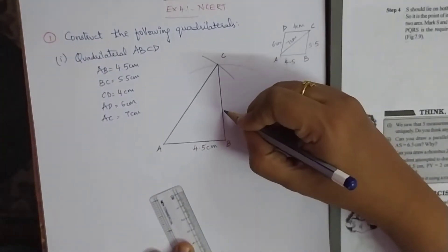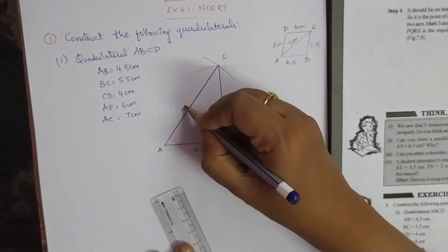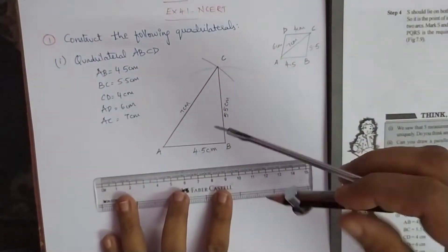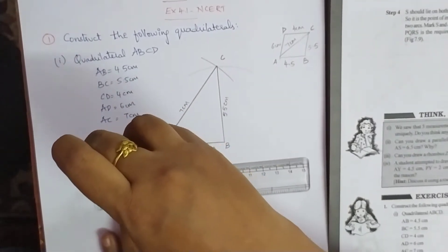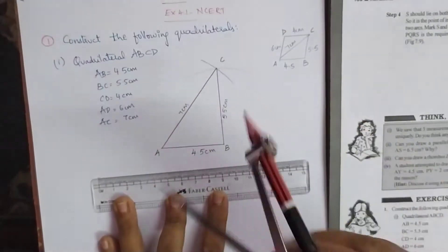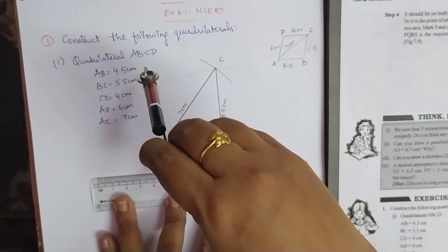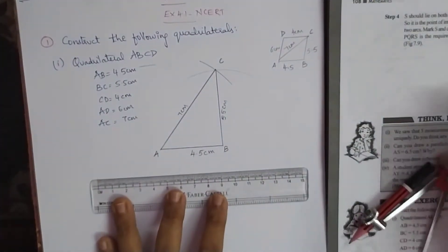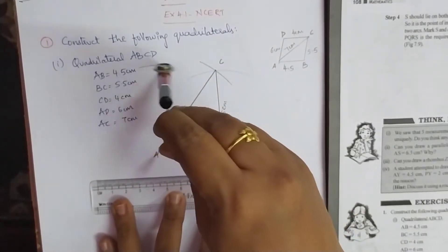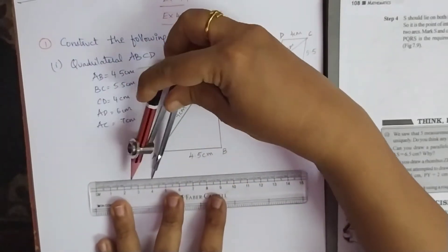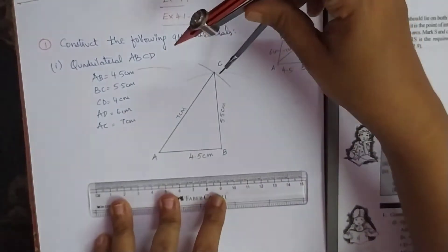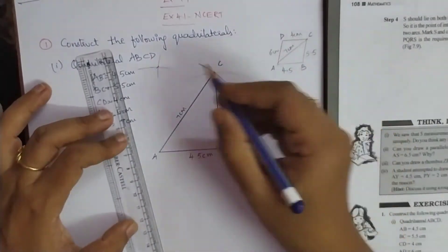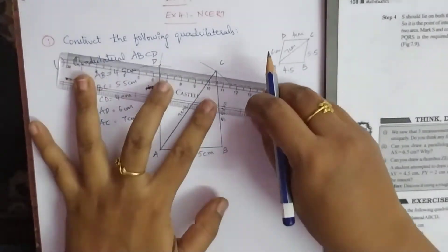Write the measurements there as 5.5 cm and 7 cm. The last measurement which is left is AD — AD is 6 cm. So from 0, take the measurement of the compass as 6 cm and draw 6 cm from A. To mark it, you mark one single arc — double marking makes a bad impression; neatness requires only a single arc. From C, take 4 cm, measure 4 cm, open your compass, and from C mark a 4 cm arc.